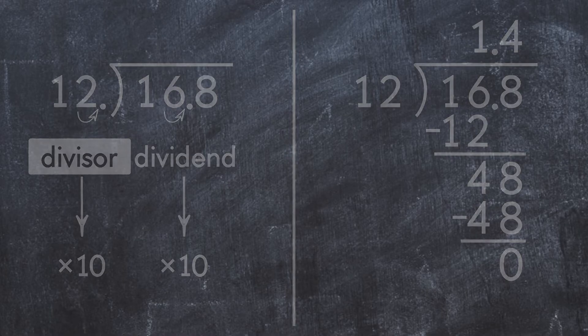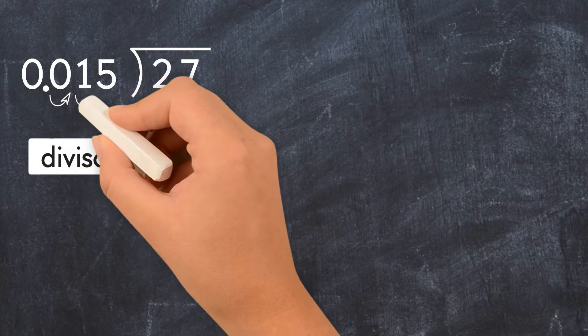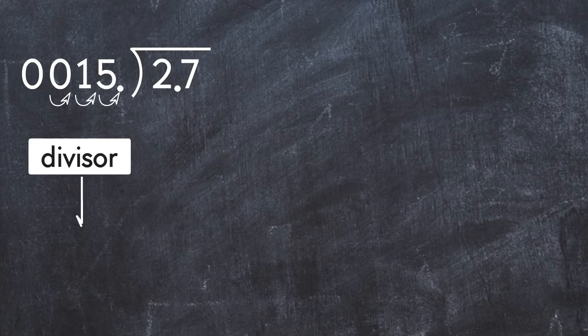Let's do another one. 2.7 divided by 0.015. To get a whole number in the divisor, we need to move the decimal point three places to the right. We do this by multiplying by 1,000. We also have to multiply the dividend by the same number.